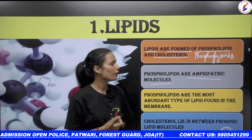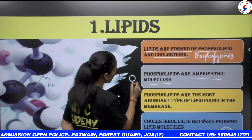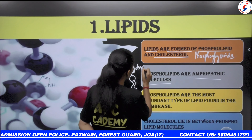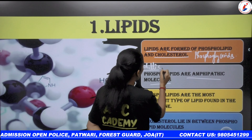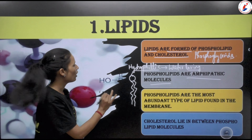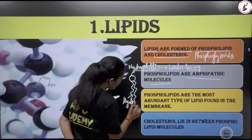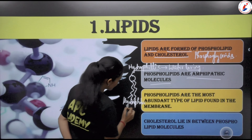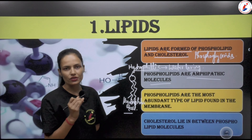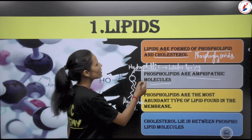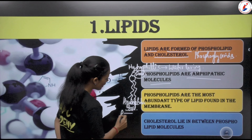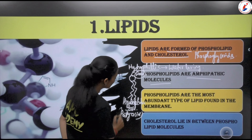Phospholipids are amphipathic molecules. Amphipathic means one end is hydrophilic and the other end is hydrophobic. The head region is hydrophilic — hydrophilic means water-loving — so the aqueous medium remains on that side. The tail is hydrophobic. So in phospholipids, the hydrophilic end is the head region, which is glycerol, and the hydrophobic end is the tail, which is the fatty acid chain.